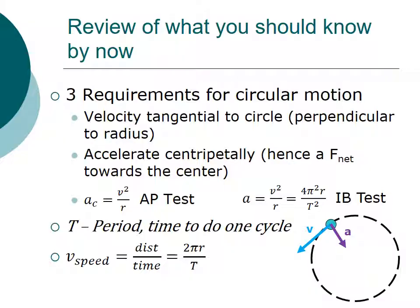Thus, in the IB test, they like to write the equation as a equals v squared over r, and then they say equals all this stuff, which is basically you're taking the speed equation right over here and plugging it in for v squared, and when you simplify, you get this. So they write it on the IB test like this, the AP test like this.